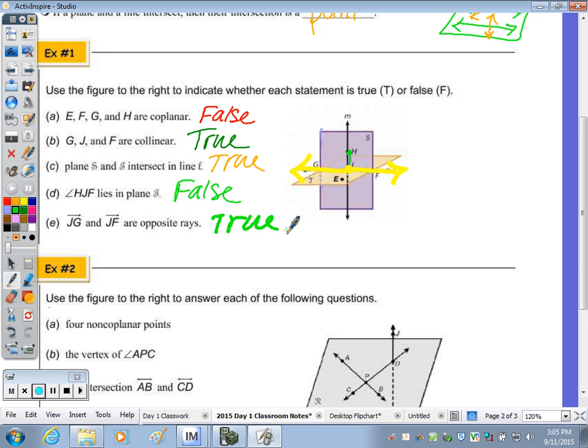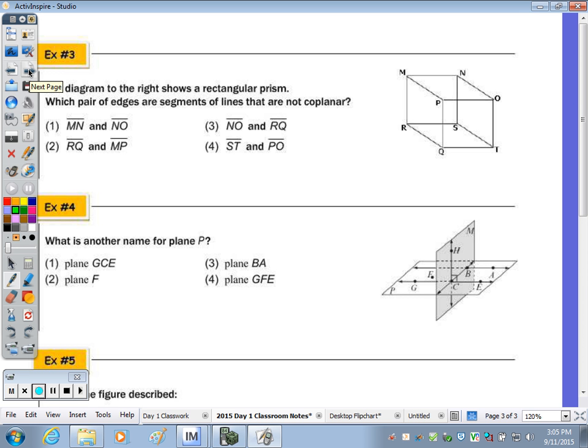All right, let's move to, we skipped number two. I'll come back and give you the answers if you'd like them. Number three, this came from a state test. It deals with a rectangular prism. And earlier I used a box of tissues. So in the diagram to the right, which pair of edges are segments of lines that are not coplanar? So we're looking at edges. When we think of a rectangular prism, you can think of each face, so there's six faces as a plane. So here's a tissue box. So which of the following edges are segments of lines that are not coplanar? In answer choice three, segments NO and RQ, when you actually insert a plane within the solid because those segments are parallel, that would connect the two. So the correct answer is not coplanar number four.